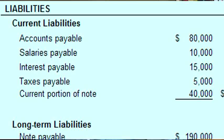In the liability section, there are only two main classes. Short-term debt is anything that's due within one year, and long-term debt is anything that's due greater than one year.